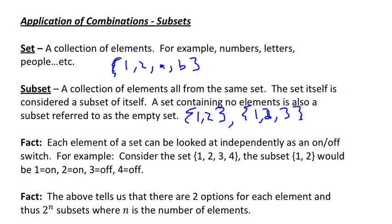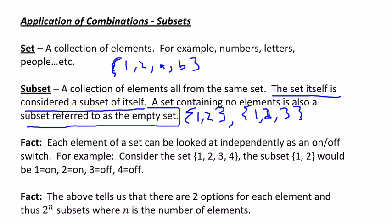Two important things to know about subsets: a set itself is considered a subset of itself, which is a little confusing — so {1, 2, A, B} is a subset of {1, 2, A, B}. And then you always have what's referred to as the empty set, which is a set that has no elements in it. We write the empty set like this — set symbols without anything in there — or occasionally with a zero with a line through it, which tells us there is nothing in it. We can't put a zero in there because zero is a number and would be an element, so zero with a line through it means there are no elements in this set.